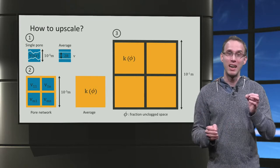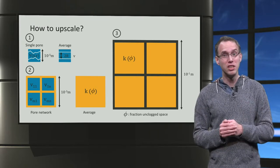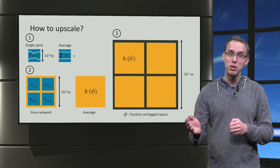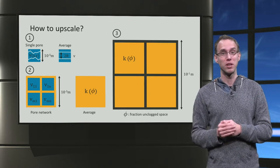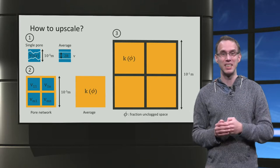If permeability and effective porosity are homogeneous in our network, we can use them as parameters and upscale to lab scale. Now what could cause heterogeneity?